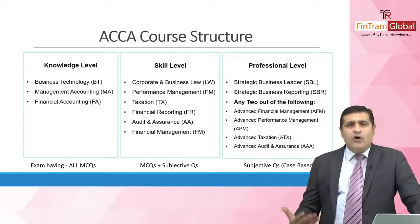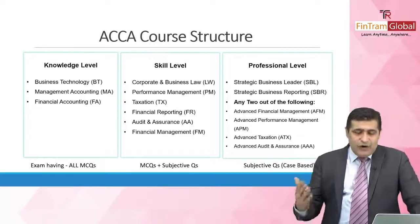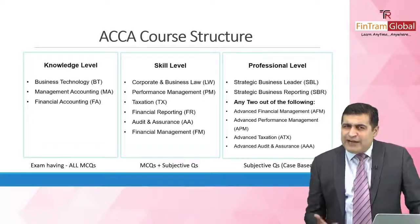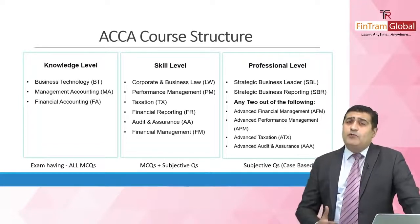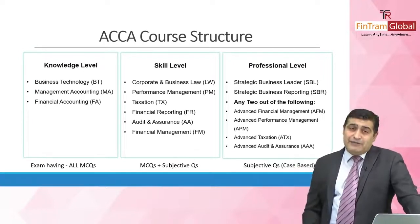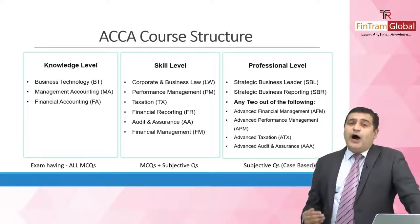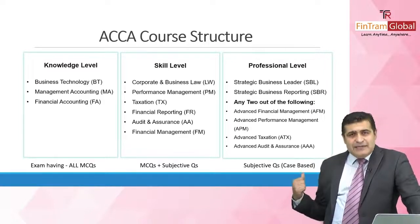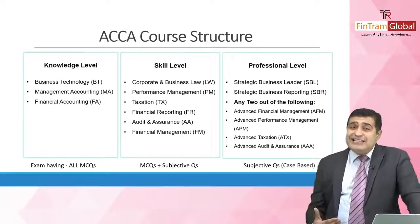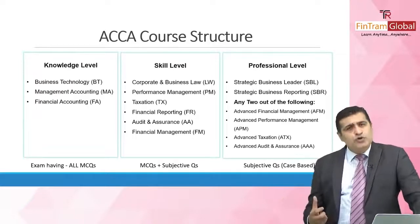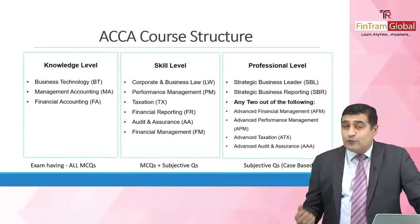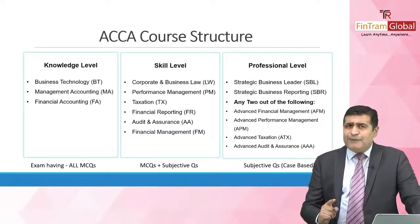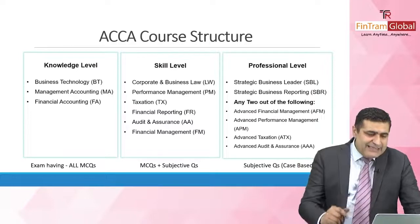The Skill Level is a CBE-based exam with MCQs plus subjective questions — you would get some MCQs and some subjective questions where you need to calculate and write, but everything happens on the computer. Moving to the Professional Level — the final level. You have two mandatory subjects: Strategic Business Reporting, which is the elder brother of Financial Reporting, and Strategic Business Leader, a very smart exam that tests your business leadership skills, covering various areas across ACCA and the management world.